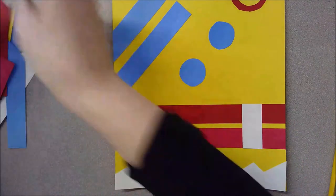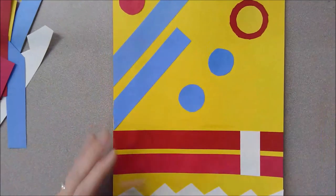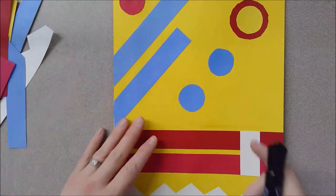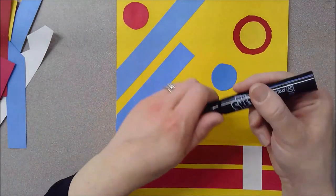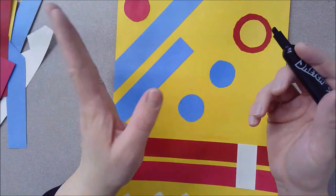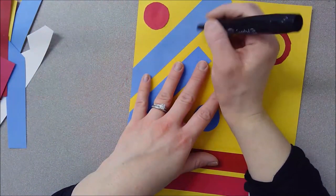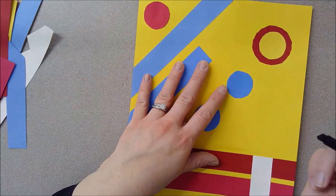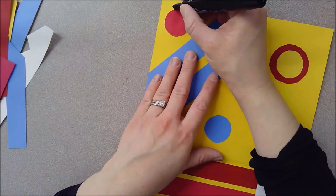Okay, so the last part of this project is to outline our finished design. So take whatever you're using, whether it's crayon, oil pastel, marker, whatever, and we are going to go around everything, tracing around everything to create a nice outline.